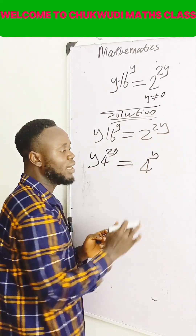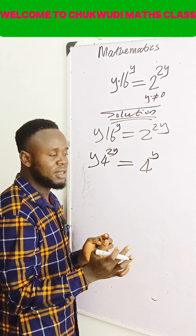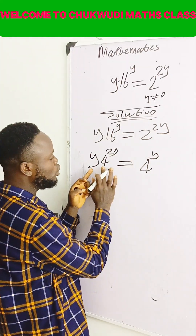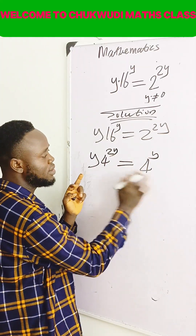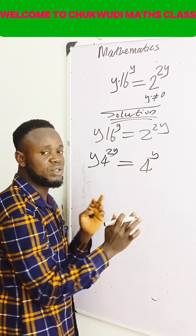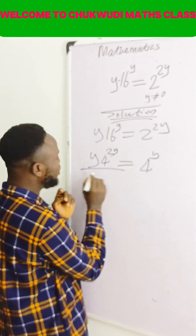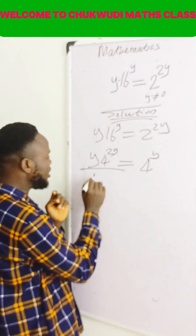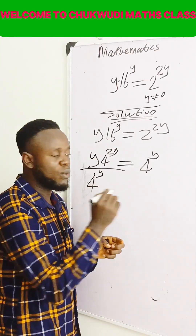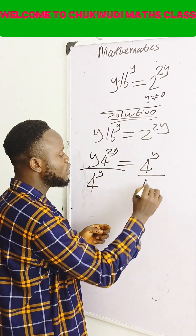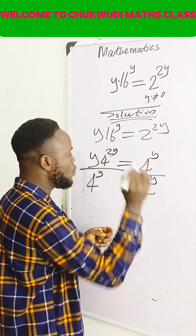This thing and this thing are the same thing. I have been able to make these two bases to be equal, so that division will be easier for me. Let me divide by 4 raised to the power y. Divide this one by 4 raised to the power y.